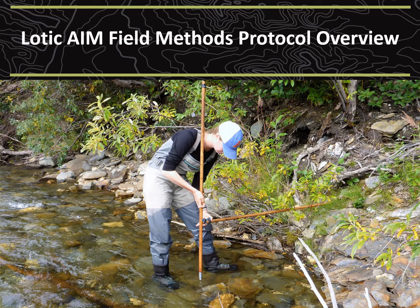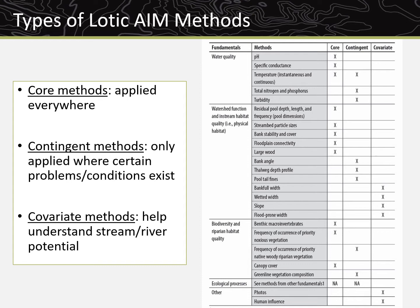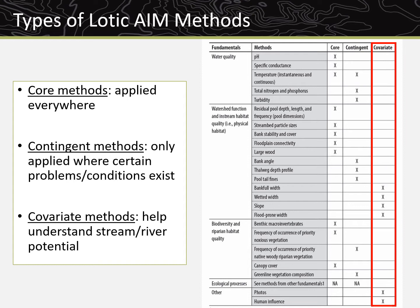In this video, we will take an introductory look at the Lotic AIM core, covariate, and contingent field methods. The goal of this video is to provide you a big picture view of the field methods collected throughout an entire sample reach. For more in-depth information on how to implement each method, reference the Technical Reference 1735-2 field protocol. Core methods are applied everywhere, contingent methods are only applied where certain problems are believed to exist, and covariates help understand stream potential.